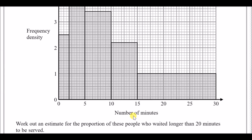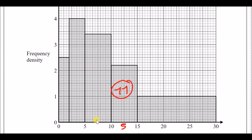Looking carefully at the histogram, which goes up to 5, 10, and so on — the block from 10 to 15 has a class width of 5 and a vertical height of 2.2, so 5 times 2.2 gives us 11. The next block has a class width of 5 and a height of 3.4, so 5 times 3.4 gives 17.